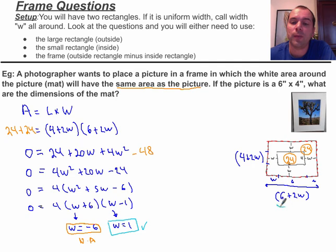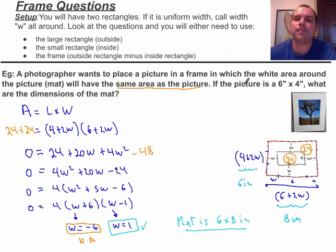But in this case we said that this is 1. So therefore, what is 6 plus 2w? That will give us 8 inches. And 4 plus 2w? That will give us 6 inches. So the mat is 6 by 8 inches.